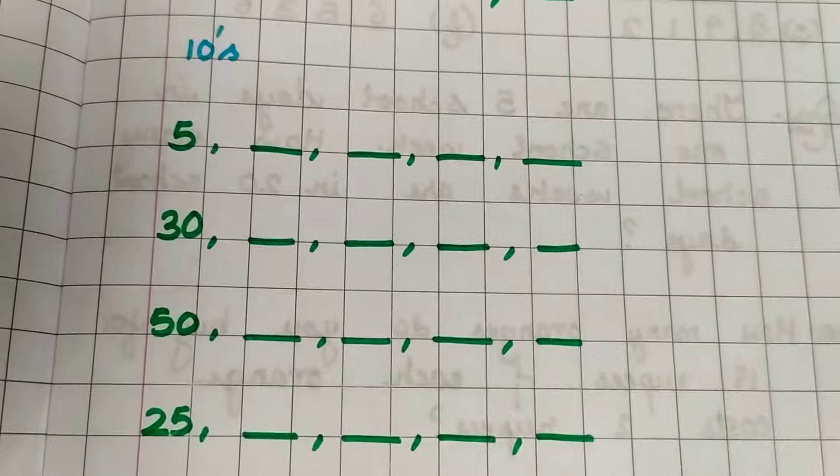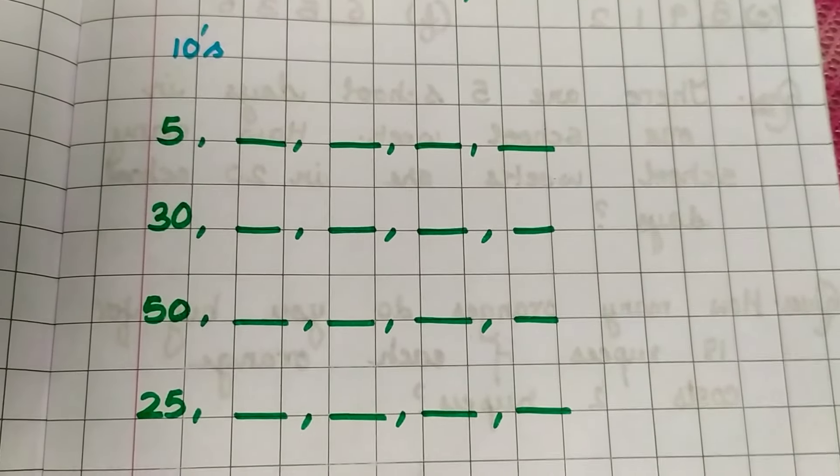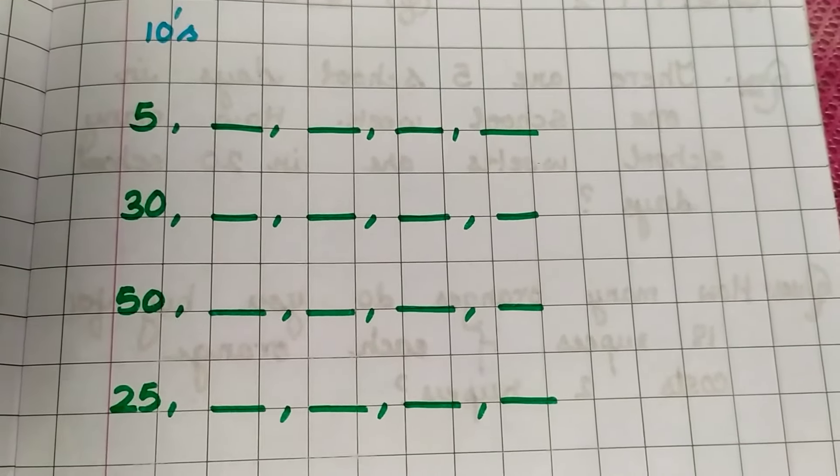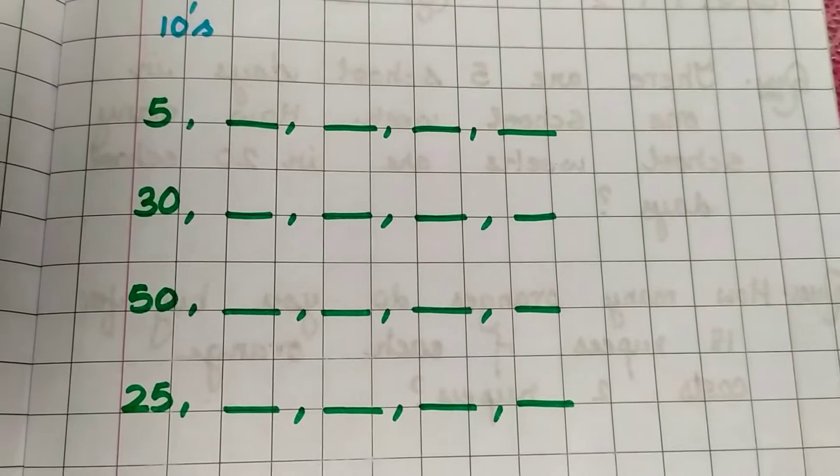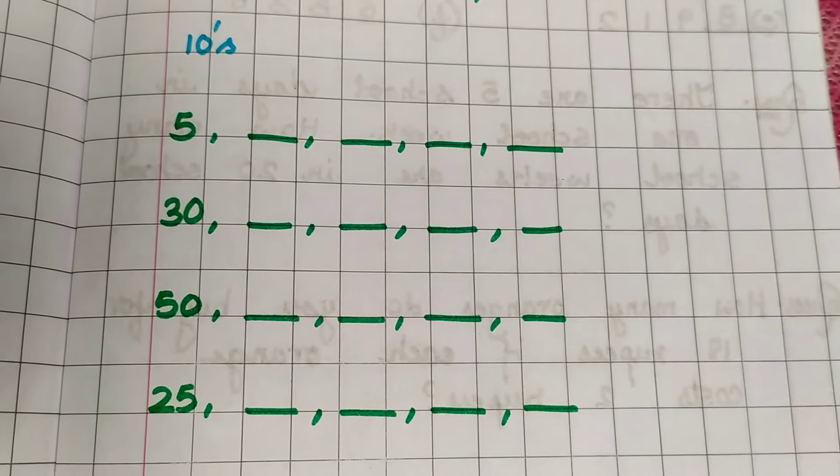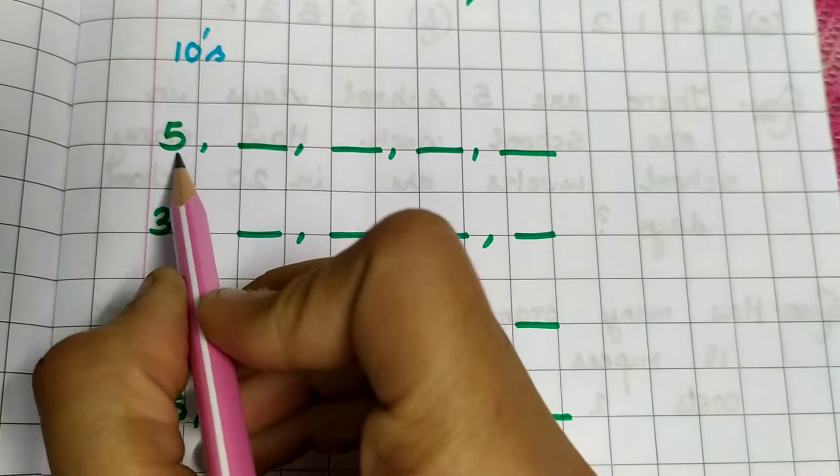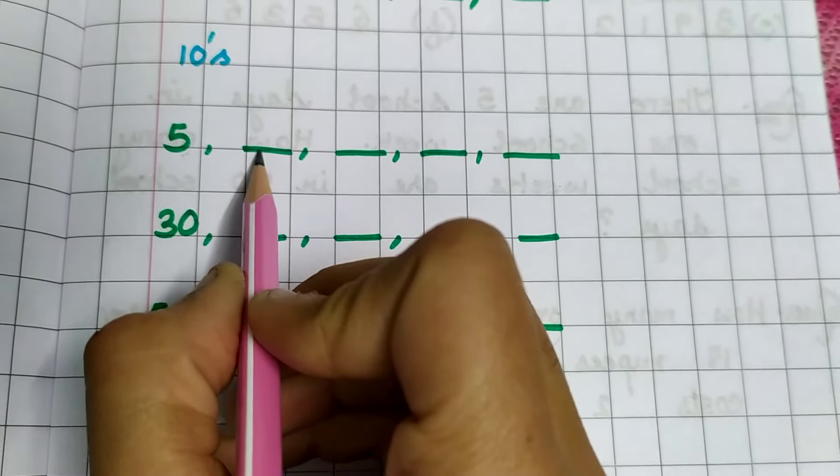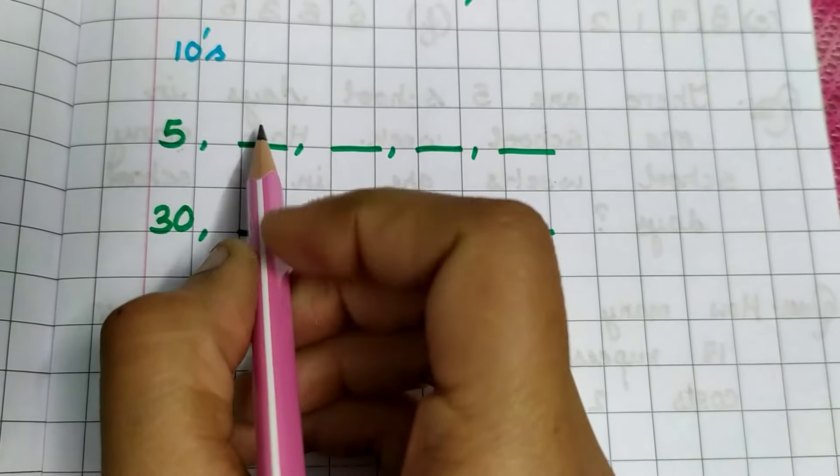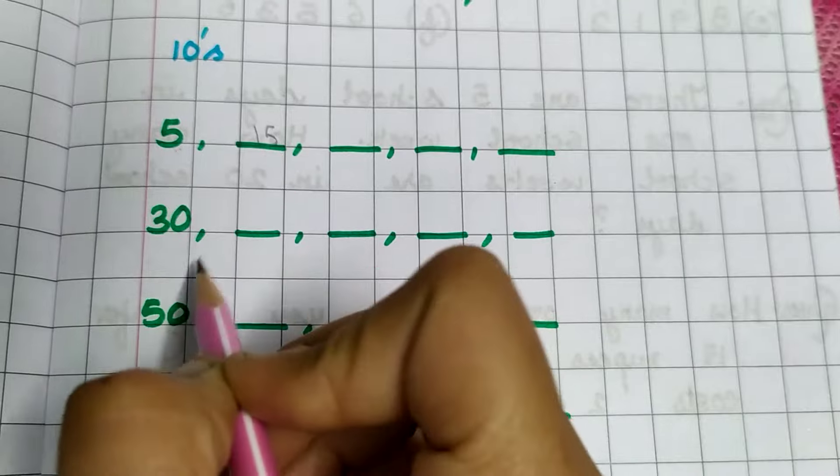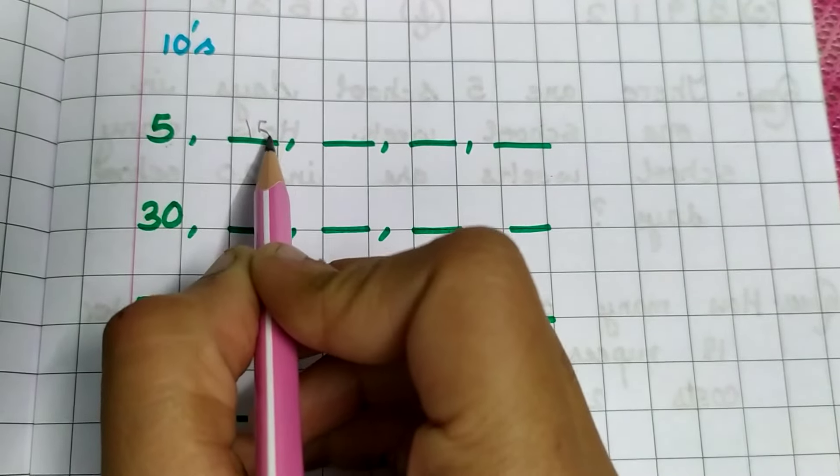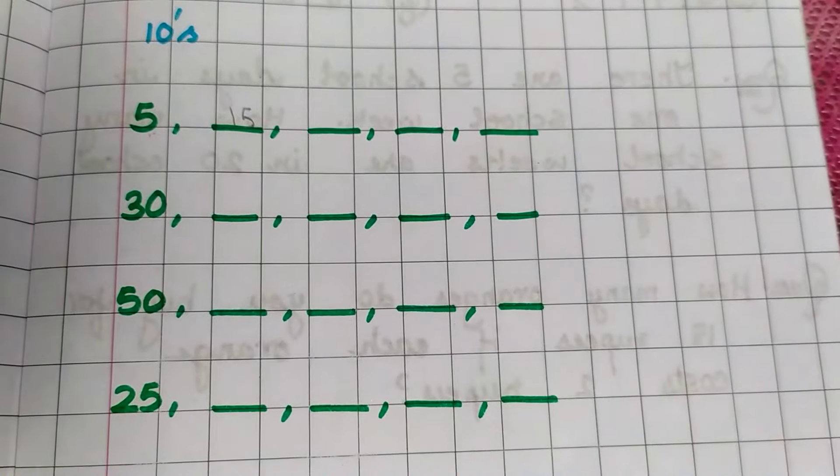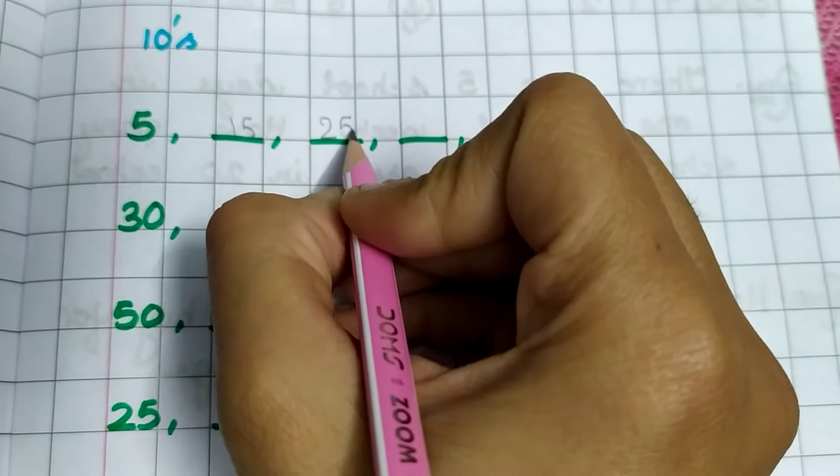Now come to skip counting by 10's. We skip 9 numbers and write the 10th number, or we can say add 10 at each step. This is 5. Add 10: 5 plus 10 is 15. Add 10 again: 15 plus 10 is 25.